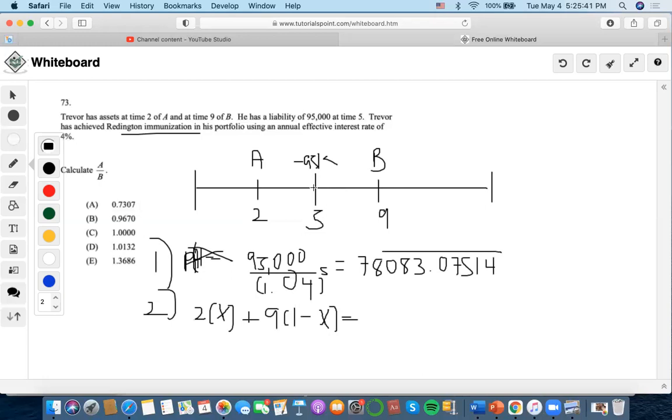Now we just want to get the modified duration part. So we're going to do 5 times 95k discounted back 5 periods at effective 4%, so we'll do 95,000 times 5 times 1.04 to the negative 5. And we're going to get 390,415.3757.